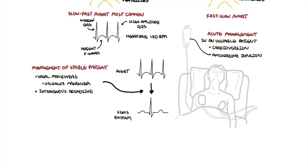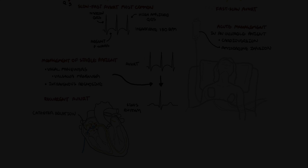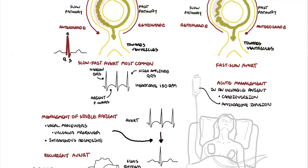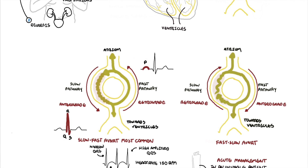Adenosine temporarily stops conduction in the atrioventricular node, thereby potentially terminating the re-entry circuit. If AVNRT becomes recurrent or does not terminate, radiofrequency delivered via catheter ablation can be directed at either the fast or slow pathway. Ablation of the slow pathway is preferred to lower the risk of complete heart block. Thank you for watching, I hope you enjoyed this video.